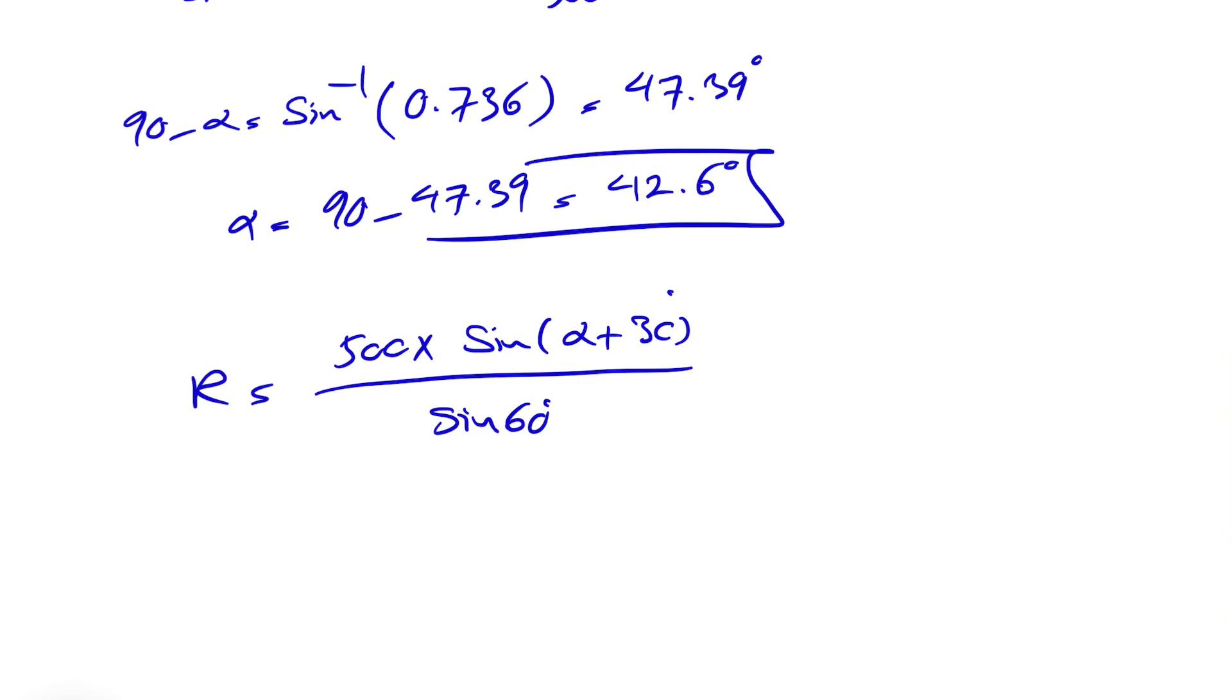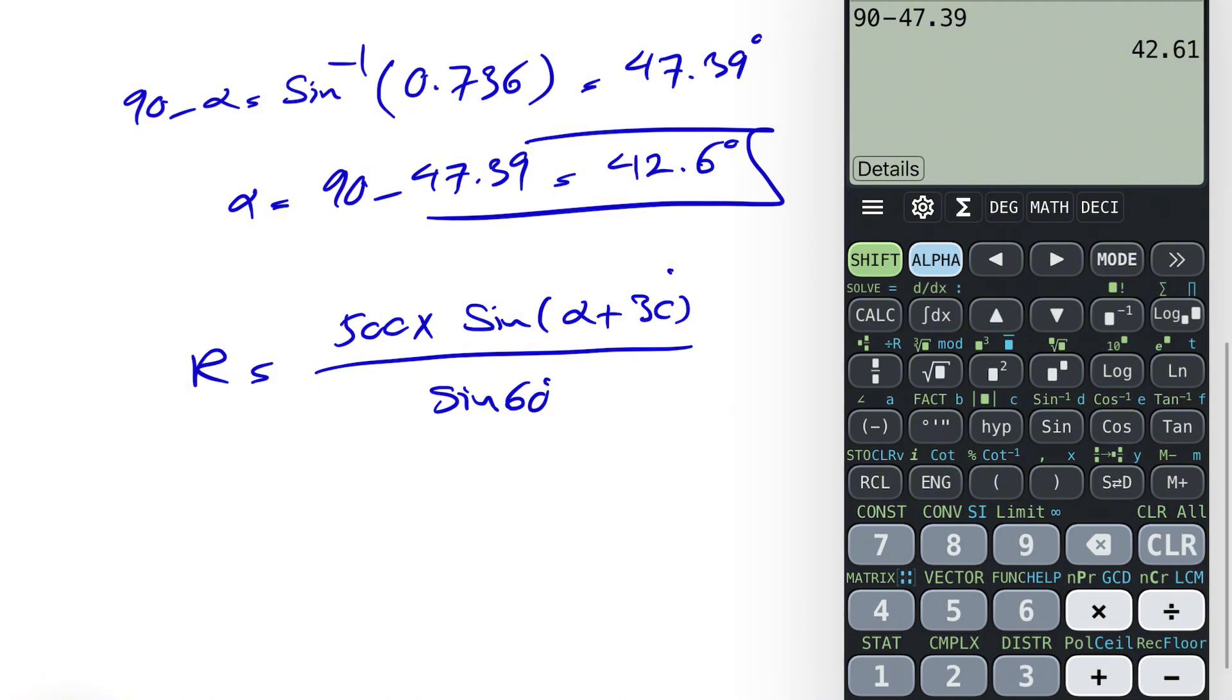Our alpha is 42.6, so we're just going to put that here. So 500 times sine of 42.6 plus 30.